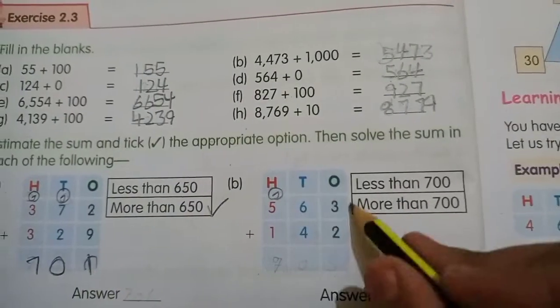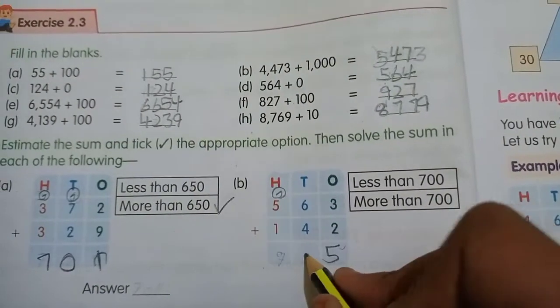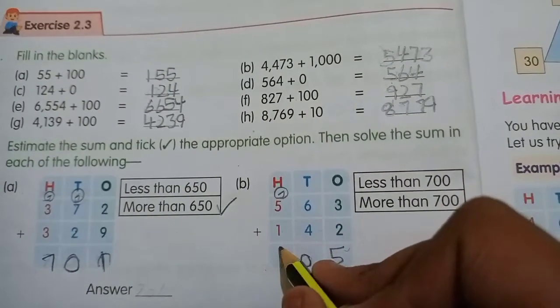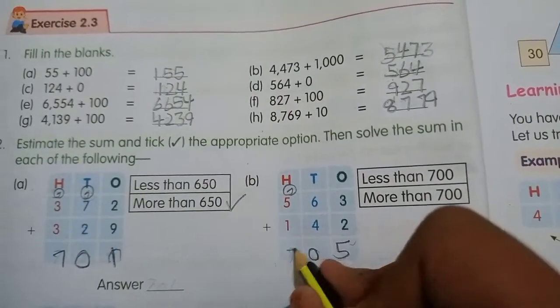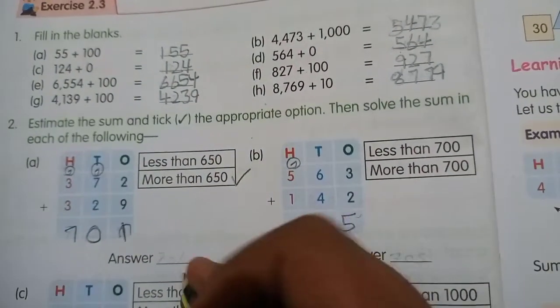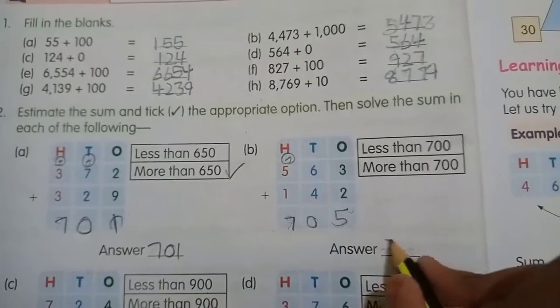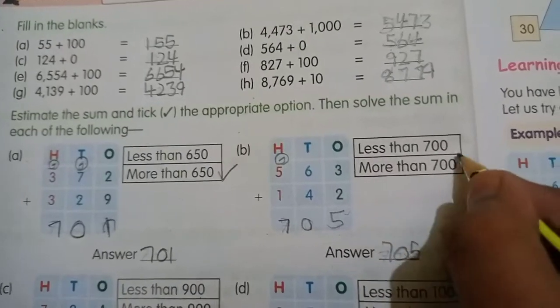3 or 2, 5, 6 or 4, 10, 1. Yahan par zero, yahan par 5, 1, 6, 6, 1, 7. Iska answer kitna aaya? 701. Iska aaya hai 705. Hamne jo guess kiya tha woh tha more than 700.